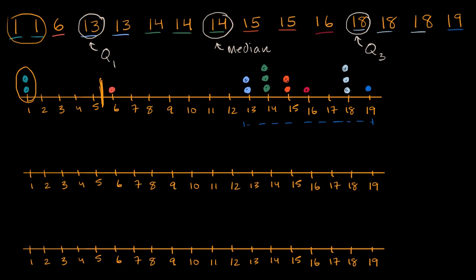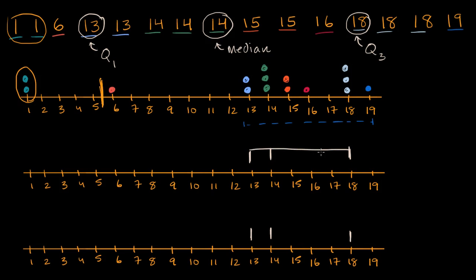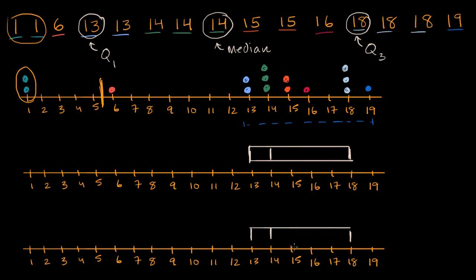If we were to draw a classic box and whiskers plot, our median is at 14, Q1 is at 13, and Q3 is at 18. So that's the box part — let me draw that as an actual box. So I'll do it both ways, drawing the same box for each.